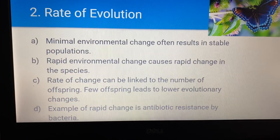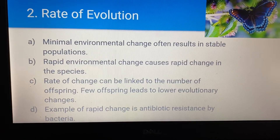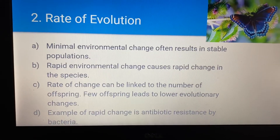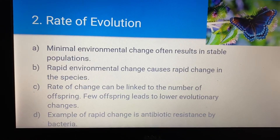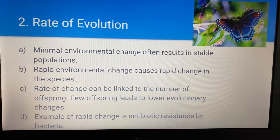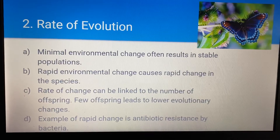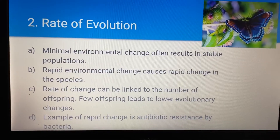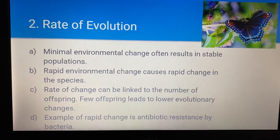Rate of change can also be linked to the number of offspring. Few offspring leads to lower evolutionary change — if you're not having as many babies, there won't be as many DNA variations.